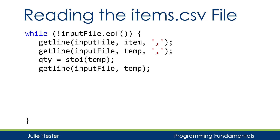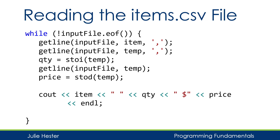Then I'll read the third and final field, also into temp. This field is a double, and because it's the last field in the record, I don't need to specify the delimiter — getline will use the default end-of-line marker. As soon as I read it into temp, I convert it to a double by calling stod and save that converted value in variable price. Now I've read all three fields in the current record and can display the values, add them to a vector, or do any other processing.